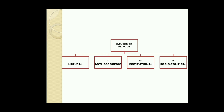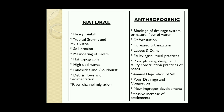Now the causes of flood. Flood is a recurring phenomenon in India and worldwide, with about 60% of flood damage occurring every year. The main causes can be divided into four categories: natural, anthropogenic, institutional, and socio-political. Natural causes include heavy rainfall, tropical storms and hurricanes, soil erosion, meandering of rivers, flat topography, high tidal waves, landslides and cloudbursts, debris flows and sedimentation, and river channel migration.